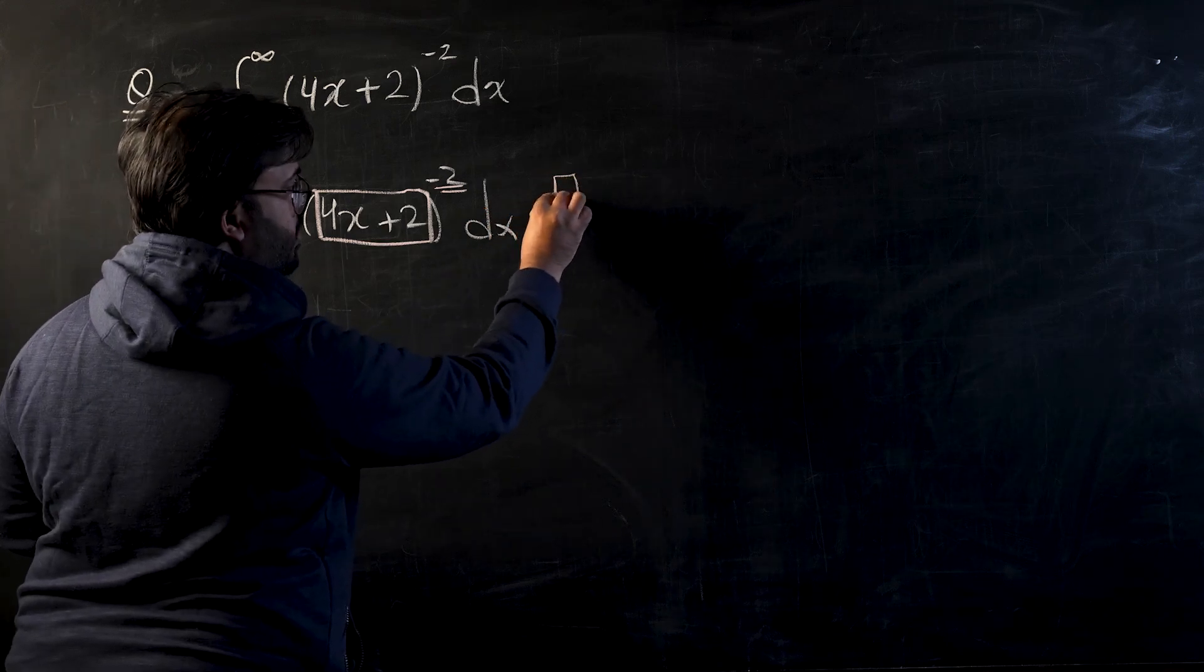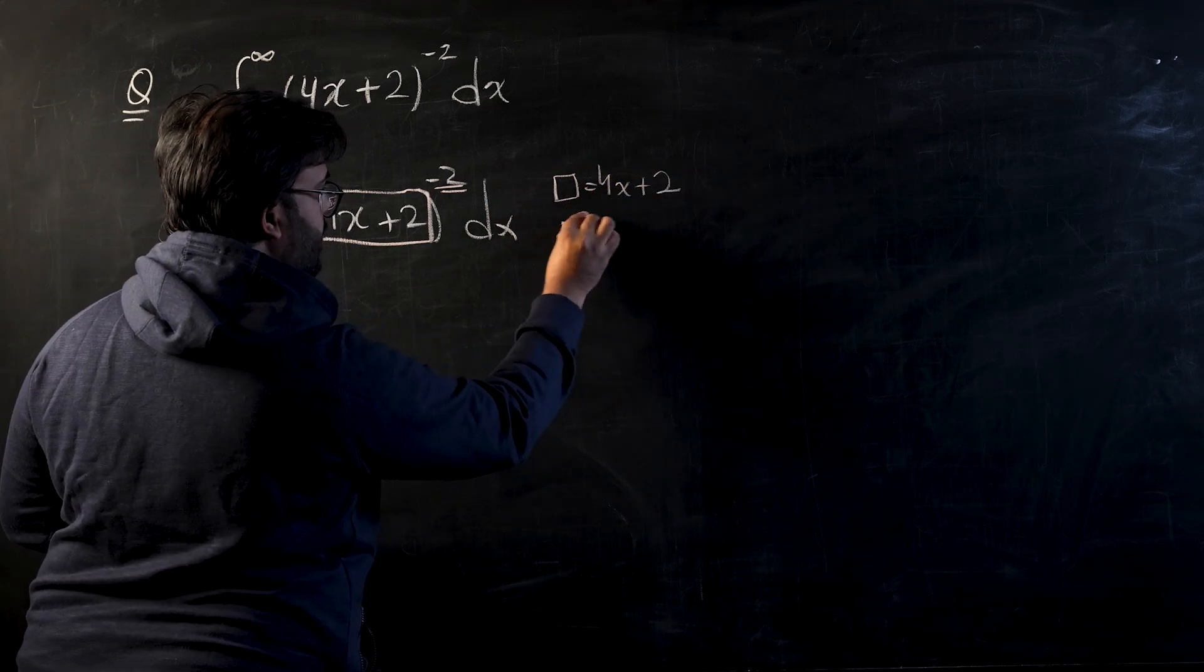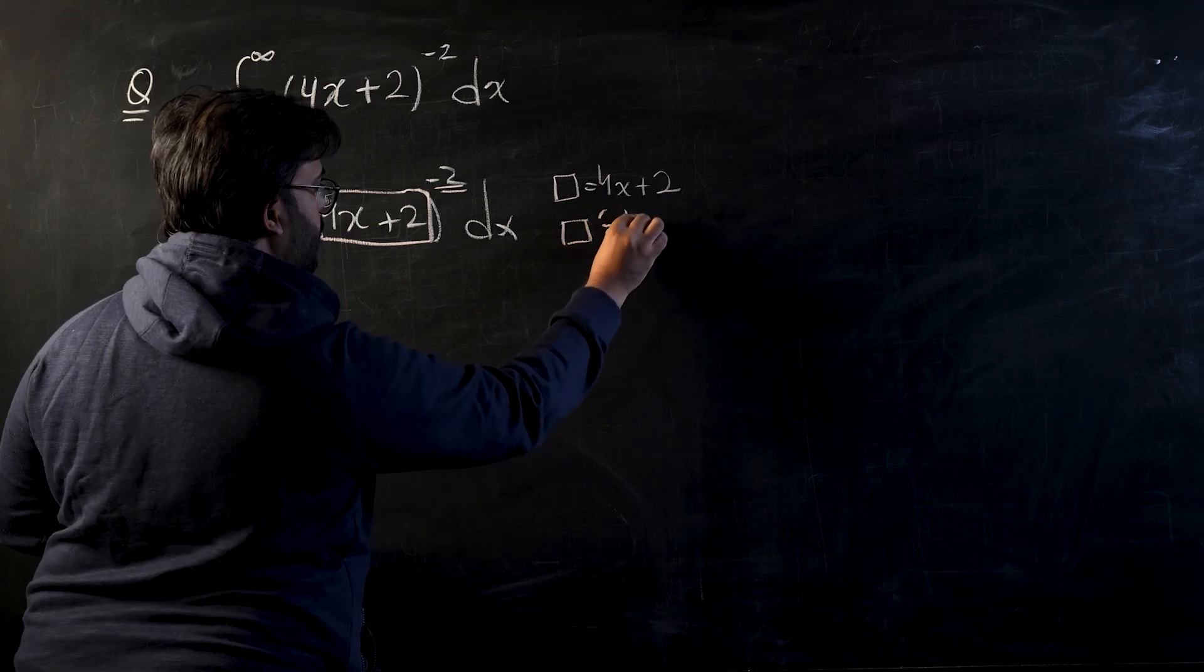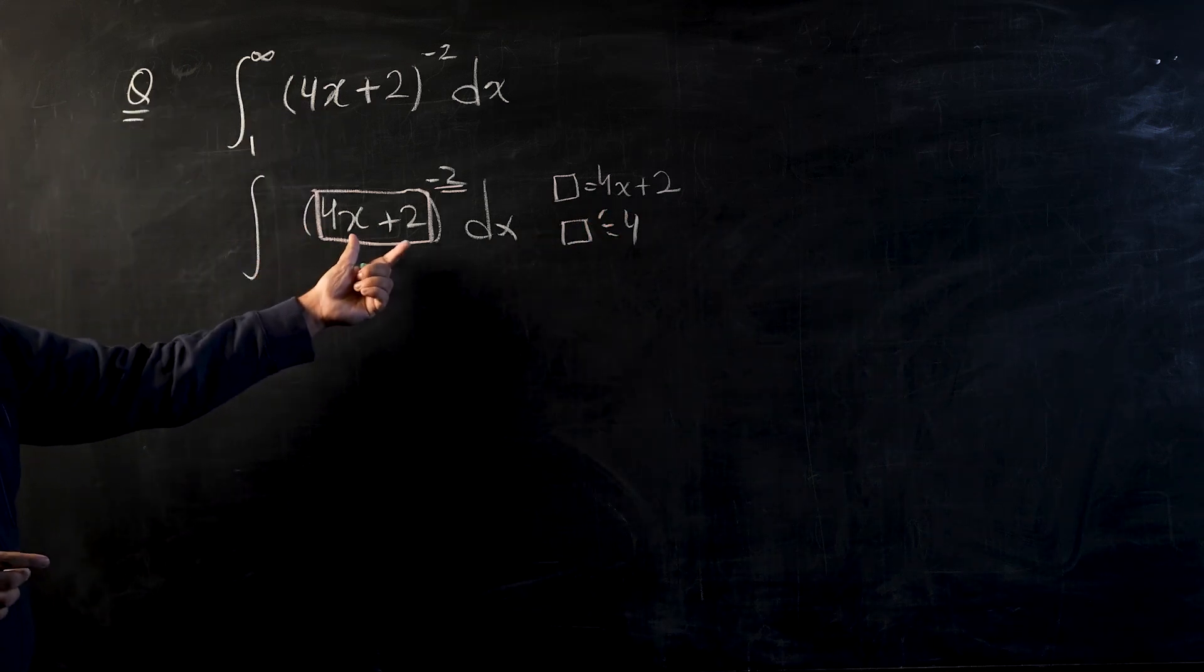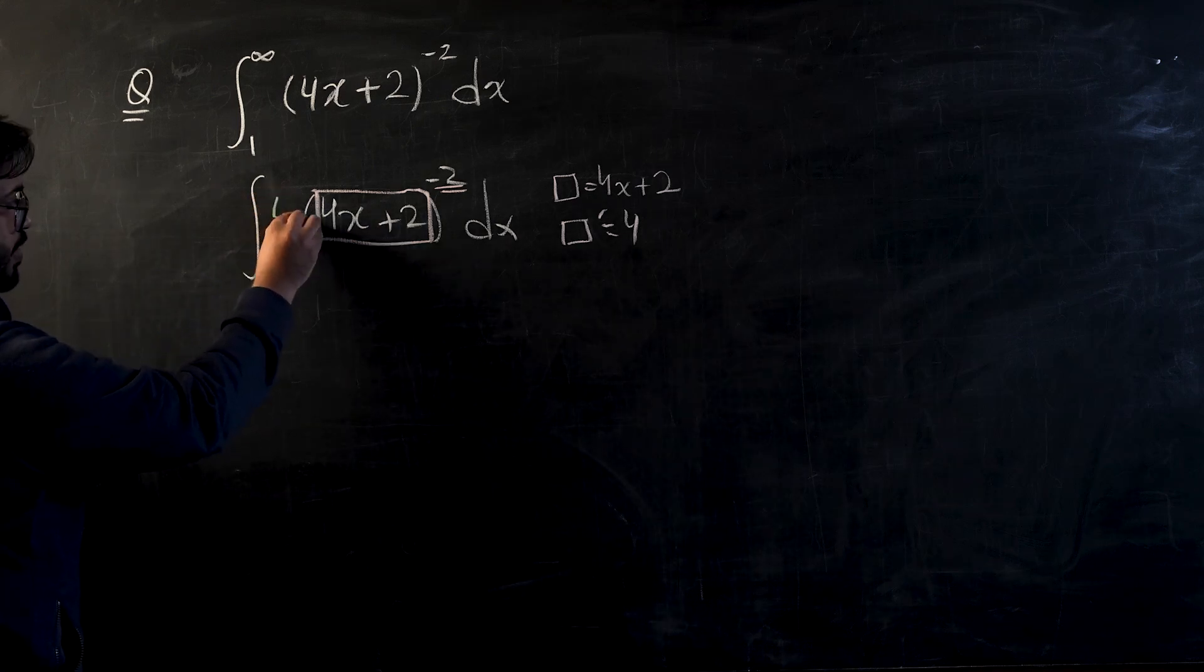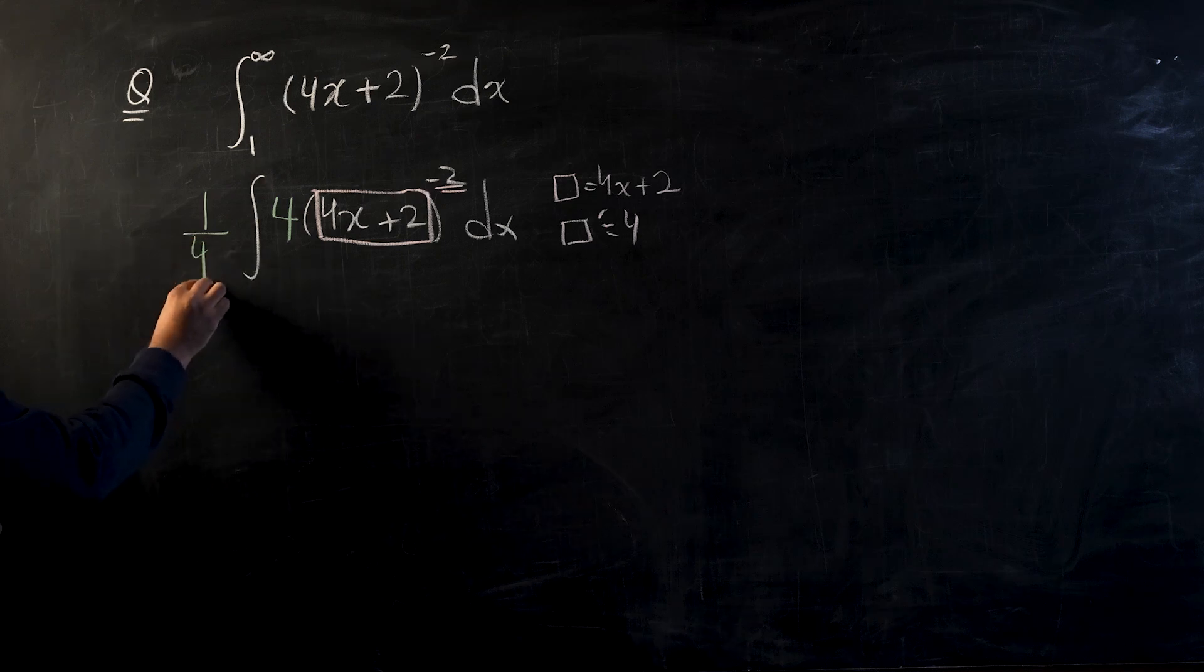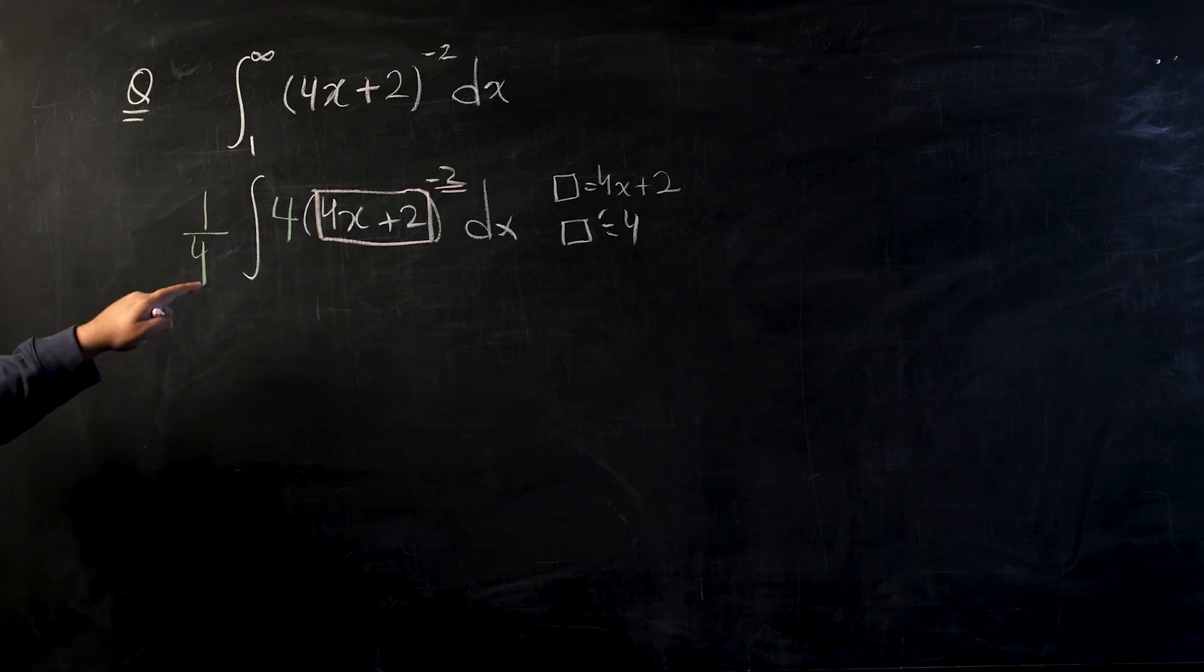We know if my box is 4x plus 2, the differentiation of box is going to become 4, and I cannot integrate this power unless differentiation of box is present outside the operator. So I'm going to introduce 4 over here, so to pay that off I am going to introduce 1 over 4 on the outer side.